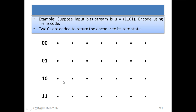For example, suppose the input bit stream is u = 1101. We encode using the trellis code. Two zeros are added to return the encoder to its zero state. There is an important point here: the initial state of the convolutional encoder must be 00, so whenever we complete encoding a bit stream we have to bring the final state of the registers back to 00 in order to be ready or prepared for the next input stream.